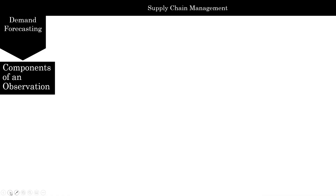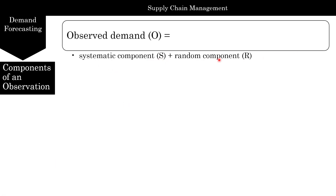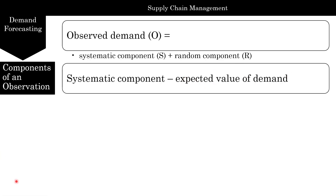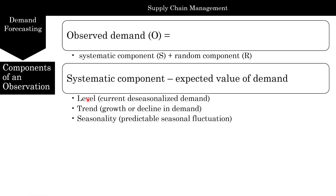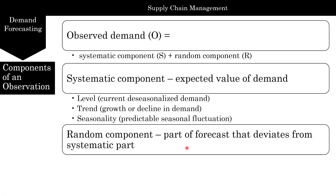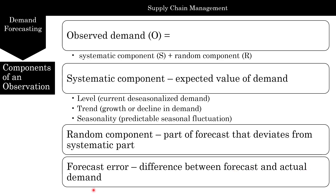Any observation can be broken up into two components: the systematic component and the random component. The systematic component is what you're expecting the value of demand to be — something you can predict — and it can be broken into three parts: level, trend, and seasonality. Level is the current de-seasonalized demand with small random fluctuations. Trend is the growth or decline in demand over a long period of time. Seasonality is predictable seasonal fluctuations — for example, in the summer you'll have increased sales of swimsuits. The random component is the part that deviates from the systematic component, and since you can't calculate it, it gives us the forecasting error — the difference between the forecast and actual demand.